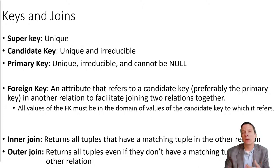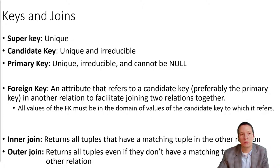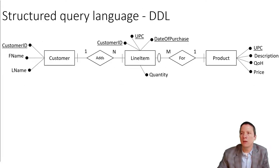The inner join takes two relations and creates a new relation based on a common value of the foreign key and the candidate key to which it refers, returning all tuples that do have a matching tuple in the other relation. The outer join returns not only all tuples with a matching tuple in the other relation, but also all non-matching tuples in one relation or the other — or both — depending on whether we do a left, right, or full outer join.